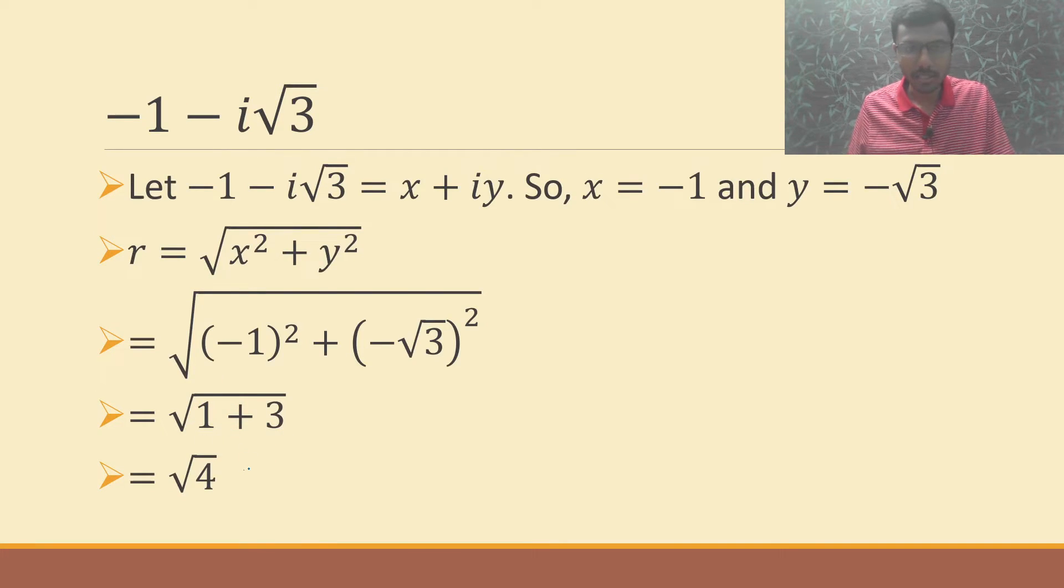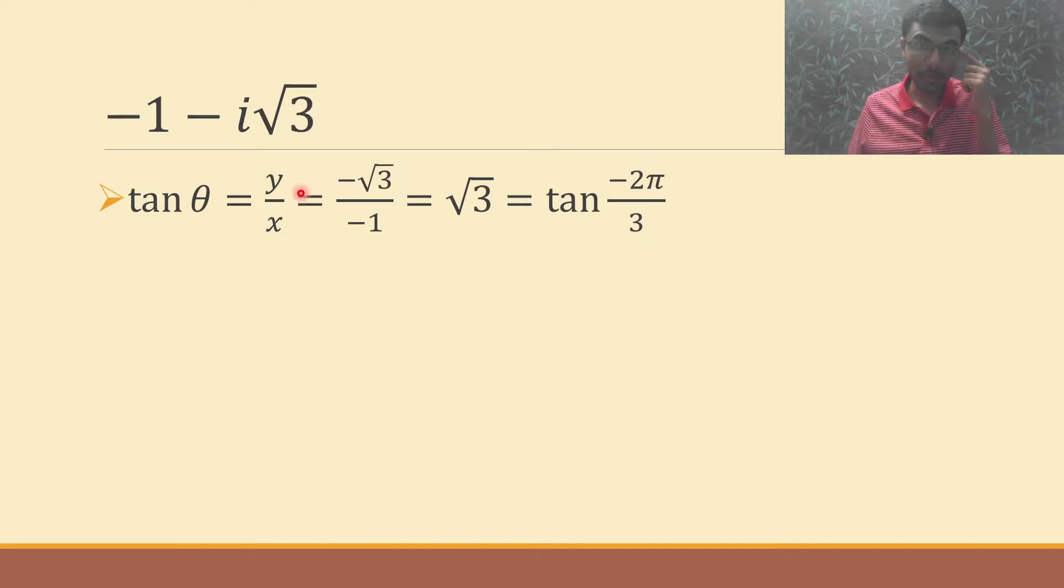So ultimately r is 2. So one thing we got. Now next, how to get θ? There is a formula: tan θ is nothing but y/x. From that we can get the value of θ. So tan θ = y/x, y was -√3 and x is -1, so minus minus cancel, ultimately I'll get √3.